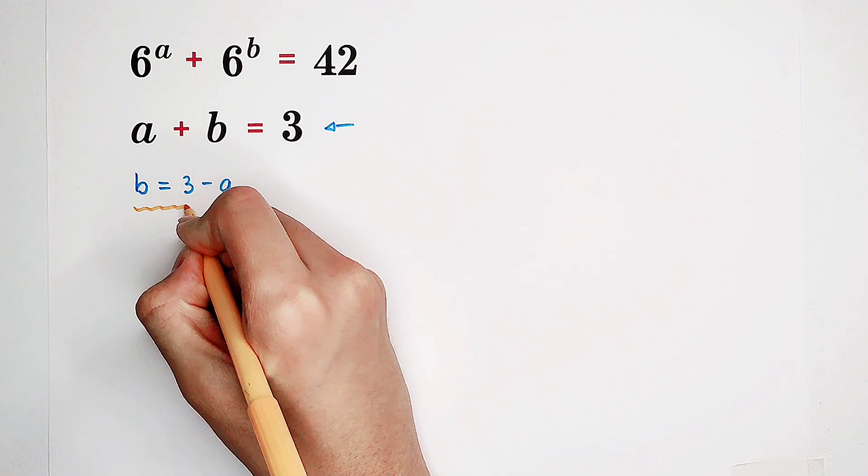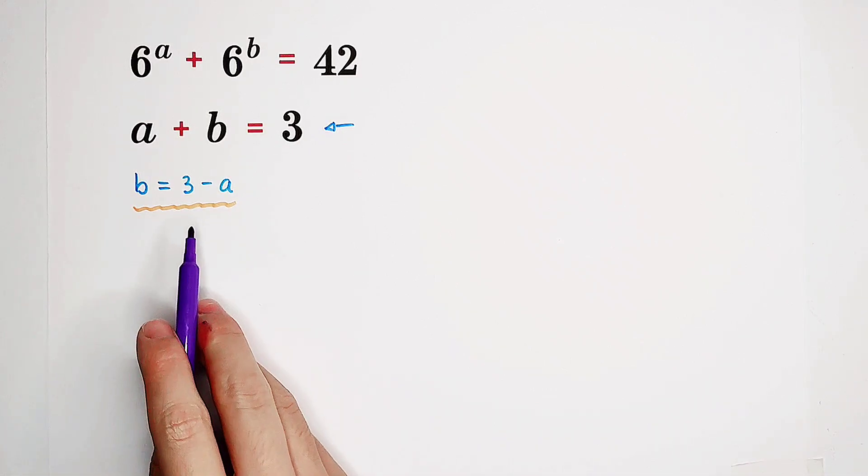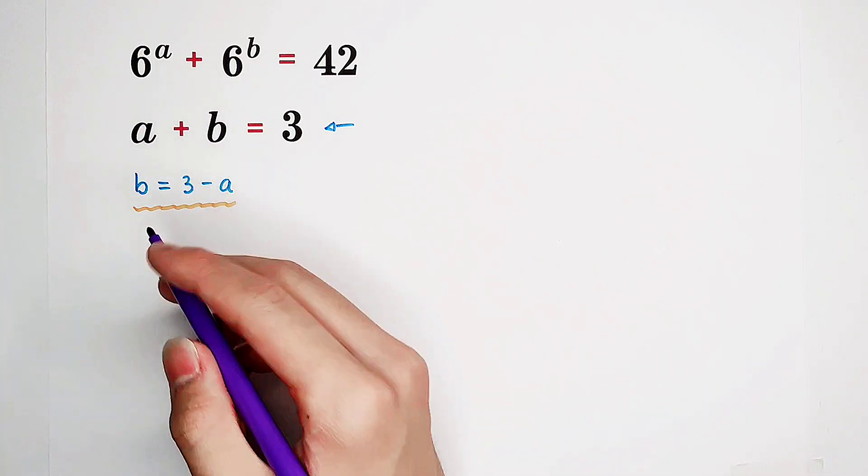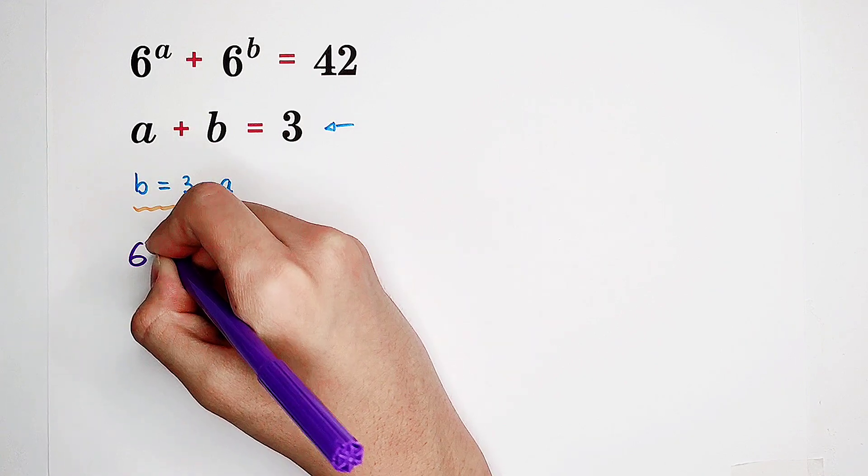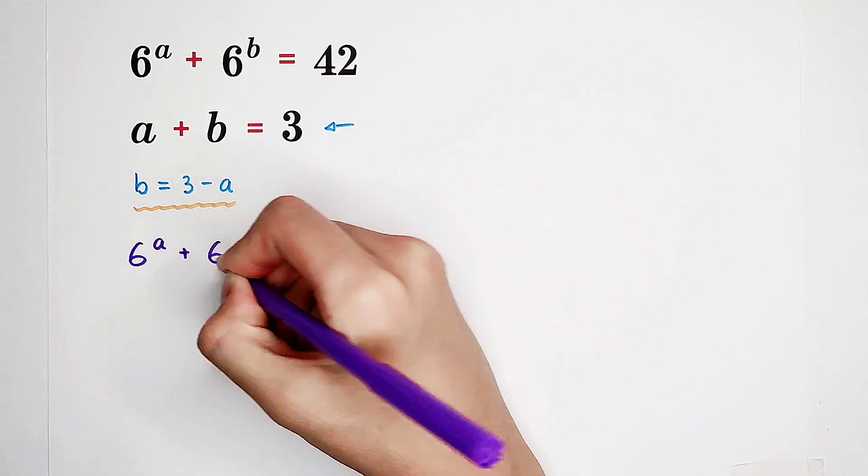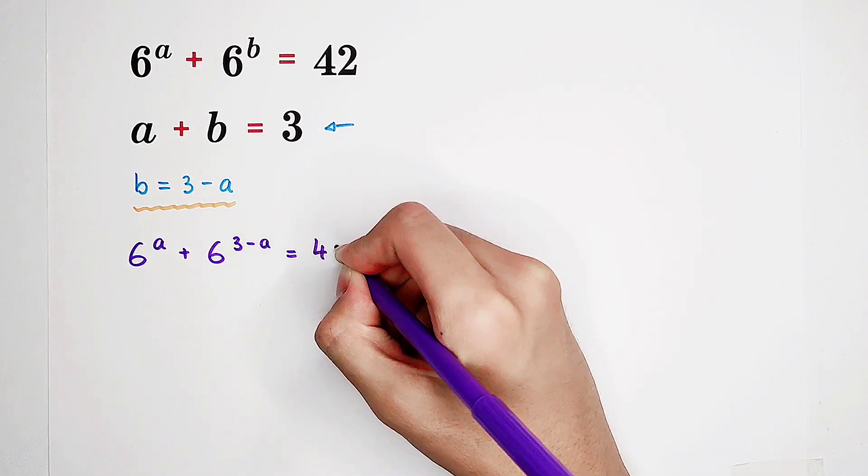And this is very important. Because now we can substitute B equals three minus A into our first equation. Then, it'll become 6 to the power of A plus 6 to the power of three minus A equals 42.